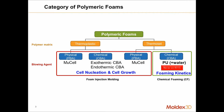With thermoplastics, we use a physical blowing agent, or PBA — we call that microcellular injection molding, and it's pretty traditional through the foaming sort of processing. Another sort of process we can use is an exothermic CBA or endothermic CBA, CBA standing for chemical blowing agent.